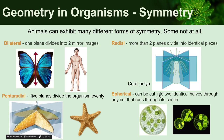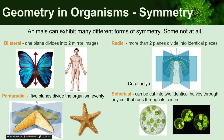Spherical symmetry is when you can divide the organism equally with any plane, as long as it runs through the center point of the organism — so it's pretty much a perfect sphere. This is shown in the common microorganism found in freshwater ponds, the volvox. If you can imagine cutting this with any plane as long as it runs through the center, it'll be equal — kind of like a sphere.